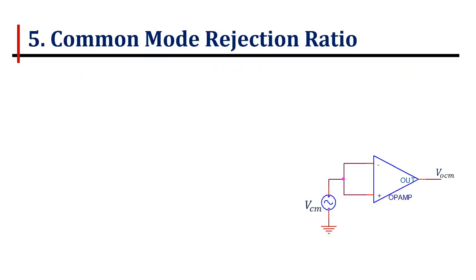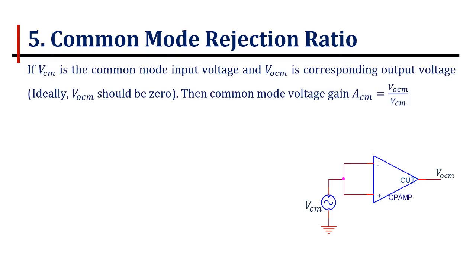Common mode rejection ratio: before going for common mode rejection ratio, we must know what is common mode voltage gain. If we apply same input to both the input terminals of the operational amplifier, that is VCM, we'll be getting output voltage VOCM, ideally which should be equal to 0. Then common mode voltage gain is given as ACM equals VOCM divided by VCM.